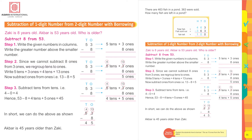Subtraction of one-digit number from two-digit number with borrowing. Zaki is 8 years old; Akbar is 53 years old. Who is older? Subtract 8 from 53. Write the given numbers in columns with the greater number at the top.